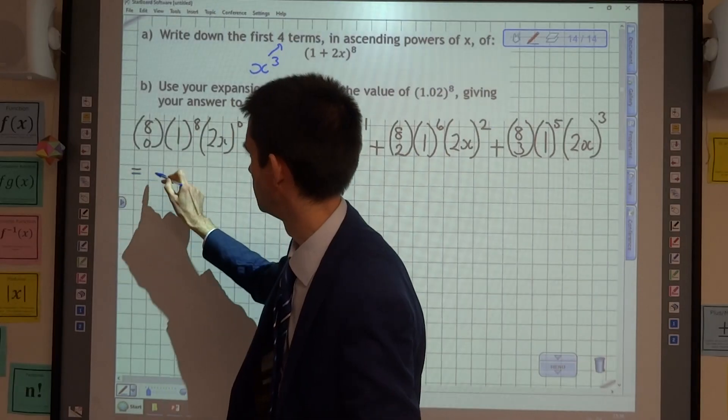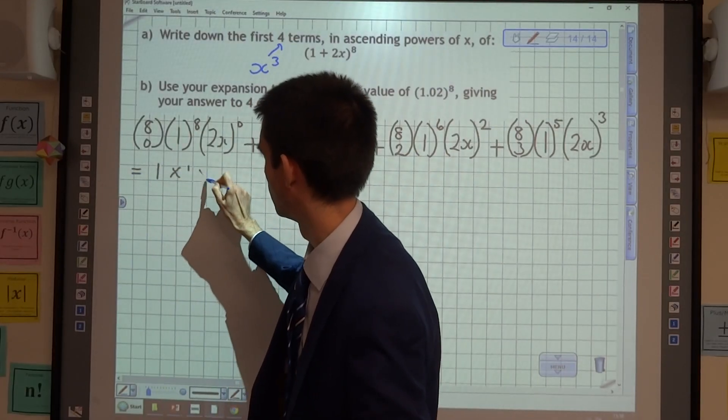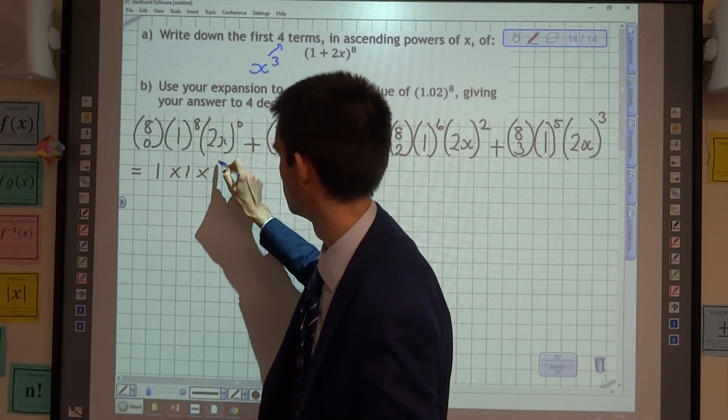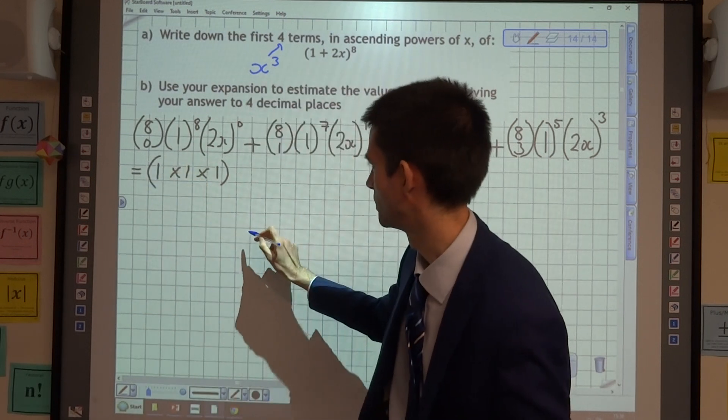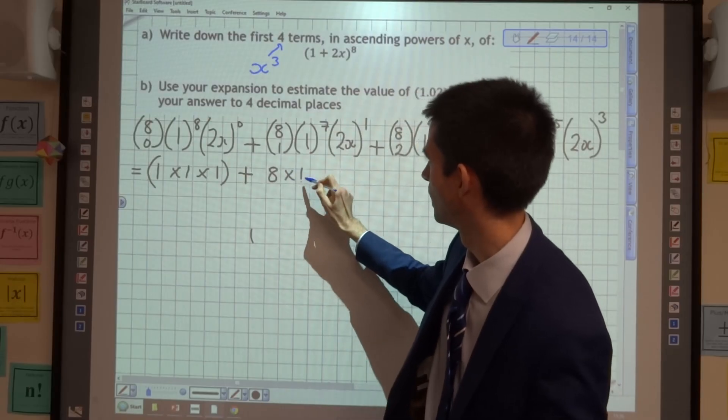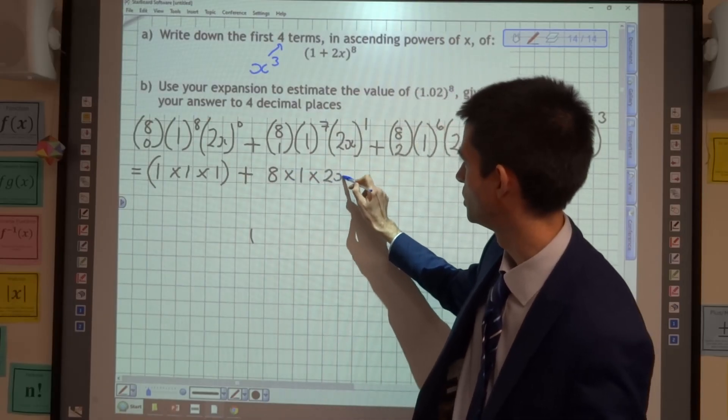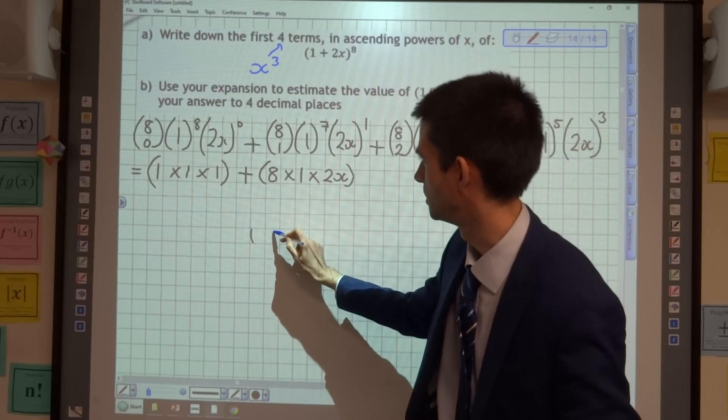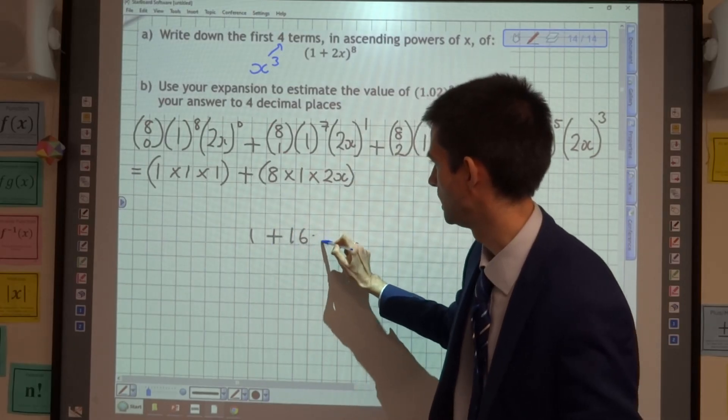So that is 1 times 1 times 1, so the first term in our expansion is 1. 8 choose 1 is 8, multiplied by 1, multiplied by 2x. So the second term in our expansion is 16x.